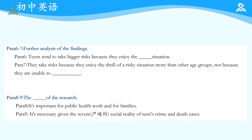Paragraph 6 and 7 are about the further analysis of the findings. According to paragraph 6, teens tend to take bigger risks because they enjoy the lucky escape situation. Lucky escape是幸运逃脱，it means you don't need to suffer the punishment after doing something risky or harmful or wrong.